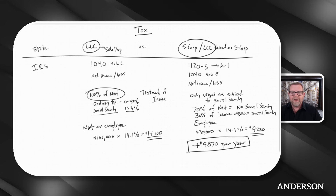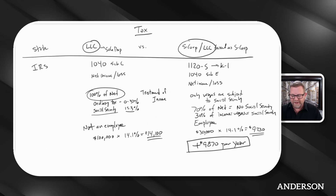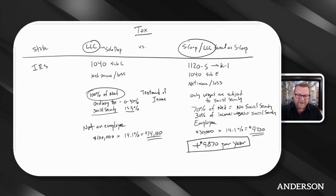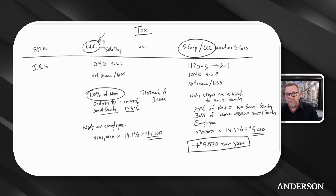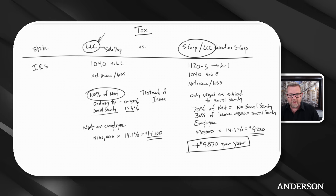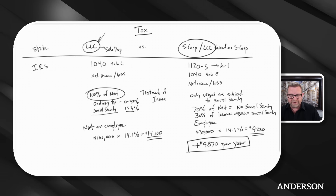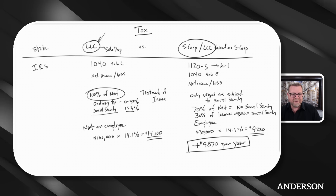And again, whether it's an S corp or an LLC taxed as an S corp, you could literally take what you're doing now as a sole proprietor and make an S election — you can even make a late S election, or do it when you file the tax return. There are ways to fix it.